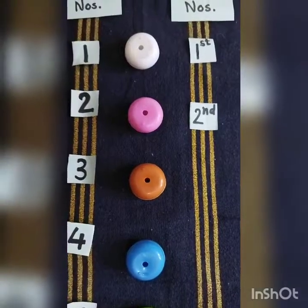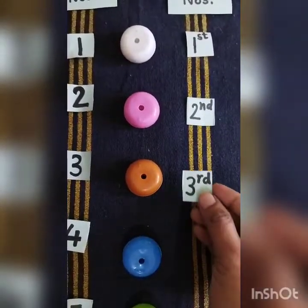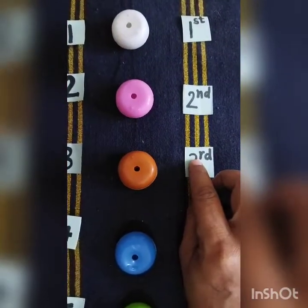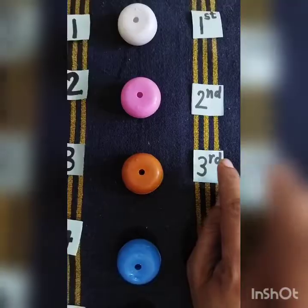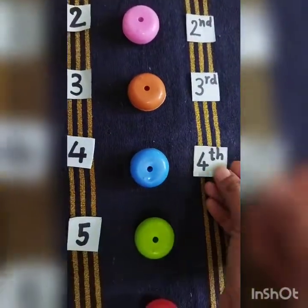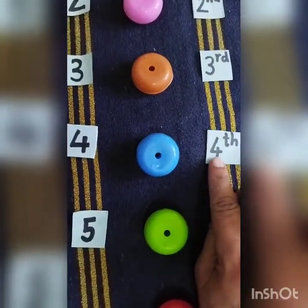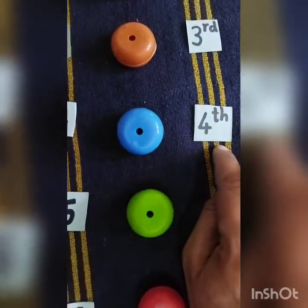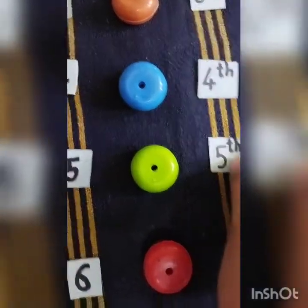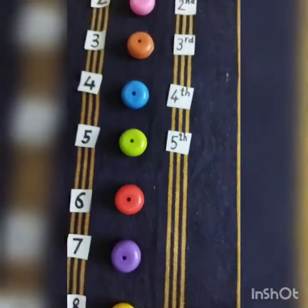Then the orange one. The orange bead is on which position? It is on third position. 3rd means third. Then blue — the blue one is on fourth position. 4th, "th" means fourth. Then green — the green bead is on fifth position. 5th means fifth.